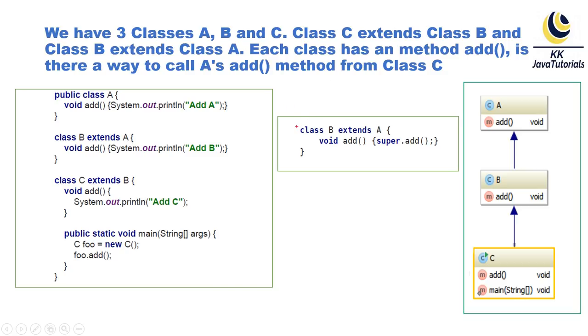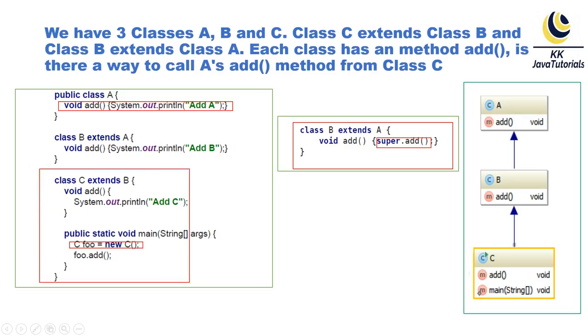So here you can see Class B can make a super.add() call. So if you want to call Class A's add() method from Class C, then here in the main() method which is within Class C, we have created an object of Class C and we are calling the add() method.